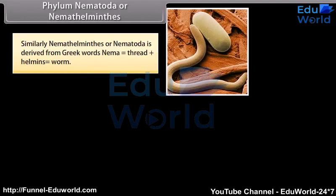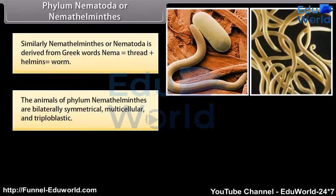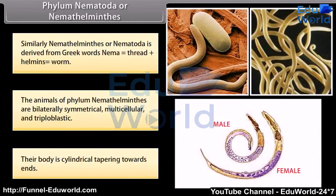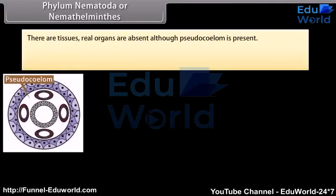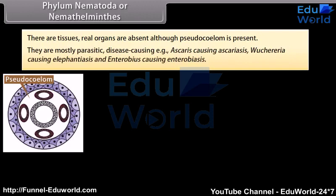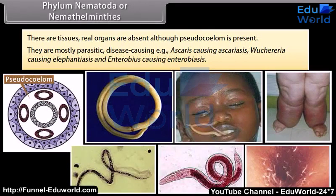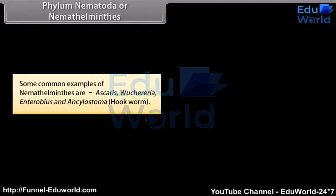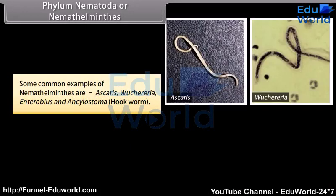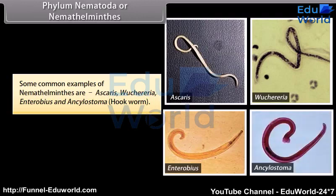Phylum Nematoda, or Nemathelminthes. Nemathelminthes is derived from Greek words: nema, meaning thread, plus helminthus, meaning worm. The animals of Phylum Nematoda are bilaterally symmetrical, multicellular, and triploblastic. Their body is cylindrical, tapering towards ends. There are tissues, but real organs are absent, although a pseudocoelom is present. They are mostly parasitic and disease-causing, e.g. Ascaris causing Ascariasis, Wuchereria causing Elephantiasis, and Enterobius causing Enterobiasis. Some common examples are Ascaris, Wuchereria, Enterobius, and Ancylostoma (hookworm).